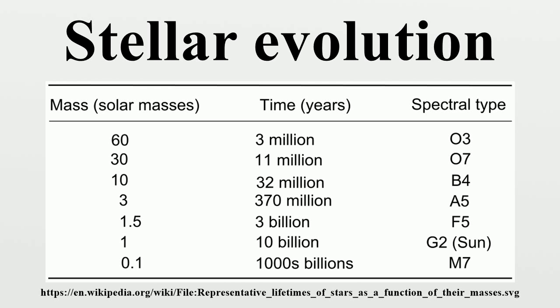Once a star like the Sun has exhausted its nuclear fuel, its core collapses into a dense white dwarf and the outer layers are expelled as a planetary nebula. Stars with around ten or more times the mass of the Sun can explode in a supernova as their inert iron cores collapse into an extremely dense neutron star or black hole.